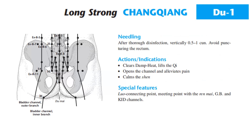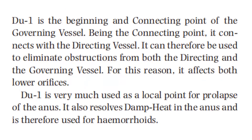DU1 calms the shen. Special features: DU1 is a luo connecting point, meeting point with the Ren Mai, gallbladder, and kidney channels. DU1 is the beginning and connecting point of the governing vessel. Being the connecting point, it connects with the directing vessel and can therefore be used to eliminate obstruction from both the directing and the governing vessel. For this reason, it affects both the lower orifices. DU1 is very much used as a local point for prolapse of the anus.